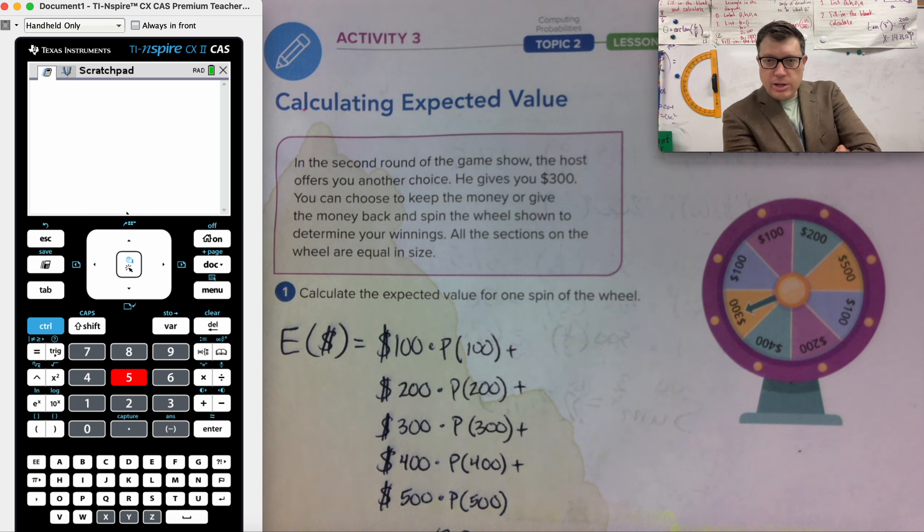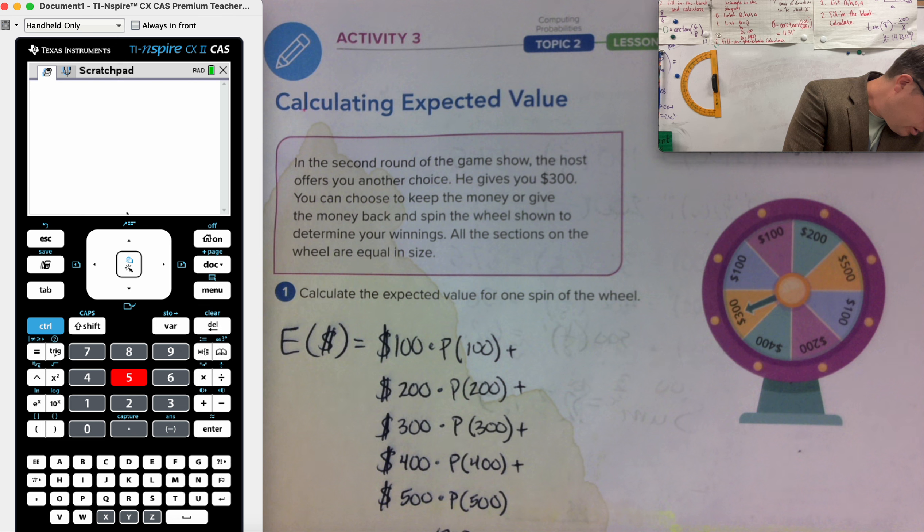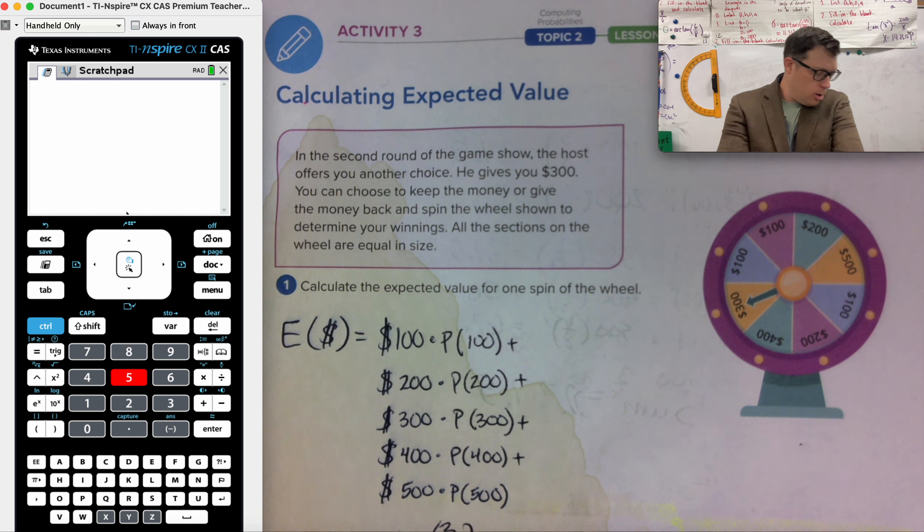Calculate the expected value for one. Okay. And this is round two. So we've already earned, why would they say 100 is still one out of four? This is question one. How can the expected value be 237.50 when that value is not on the wheel? It's not. Expected value is that amount.